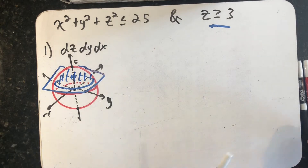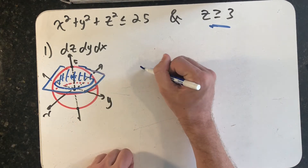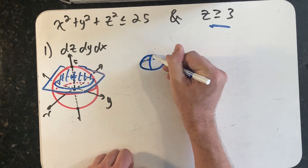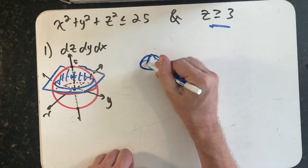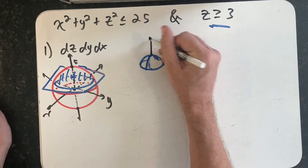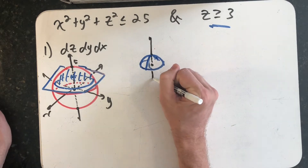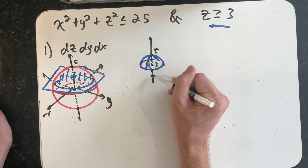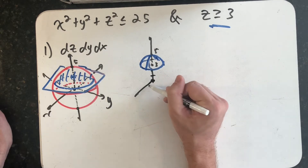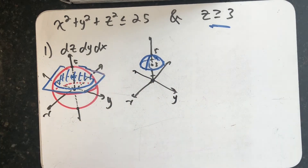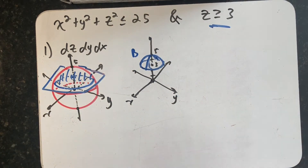The circle lies in the plane z equals 3, and above it is the top part of the sphere. So z equals 3 marks the base, z equals 5 is the top, with the origin below. Adding the x-axis and y-axis completes the picture. That spherical cap is region B — the region we're asked to integrate over.